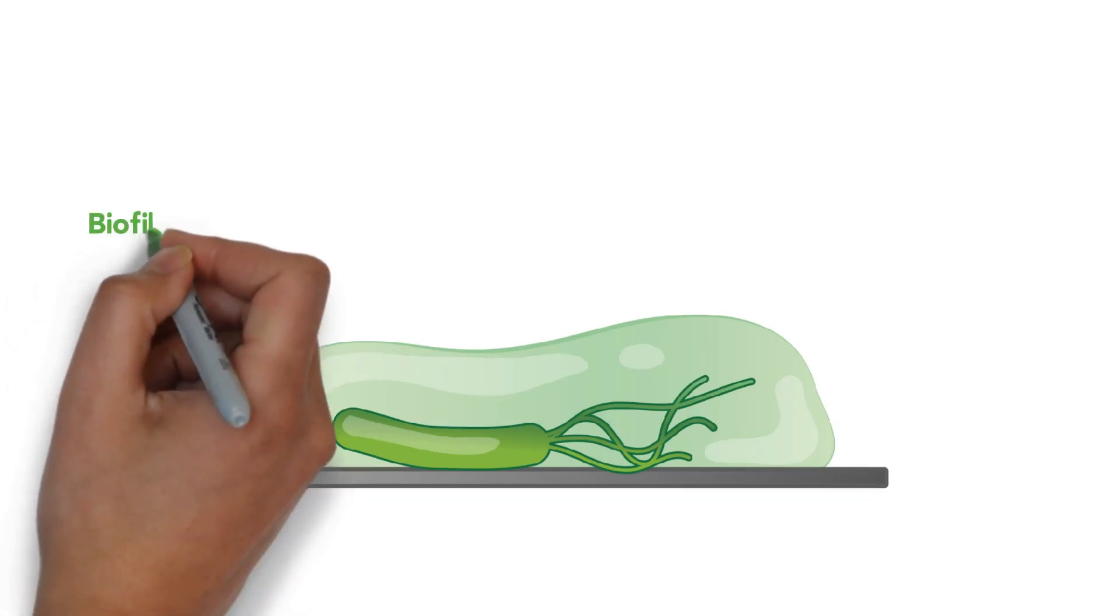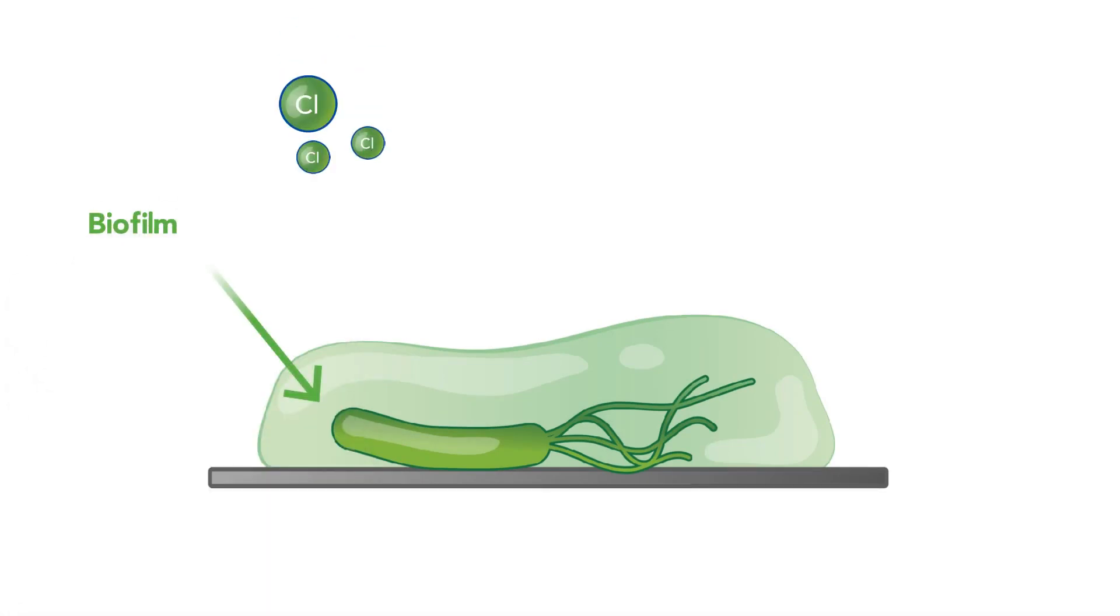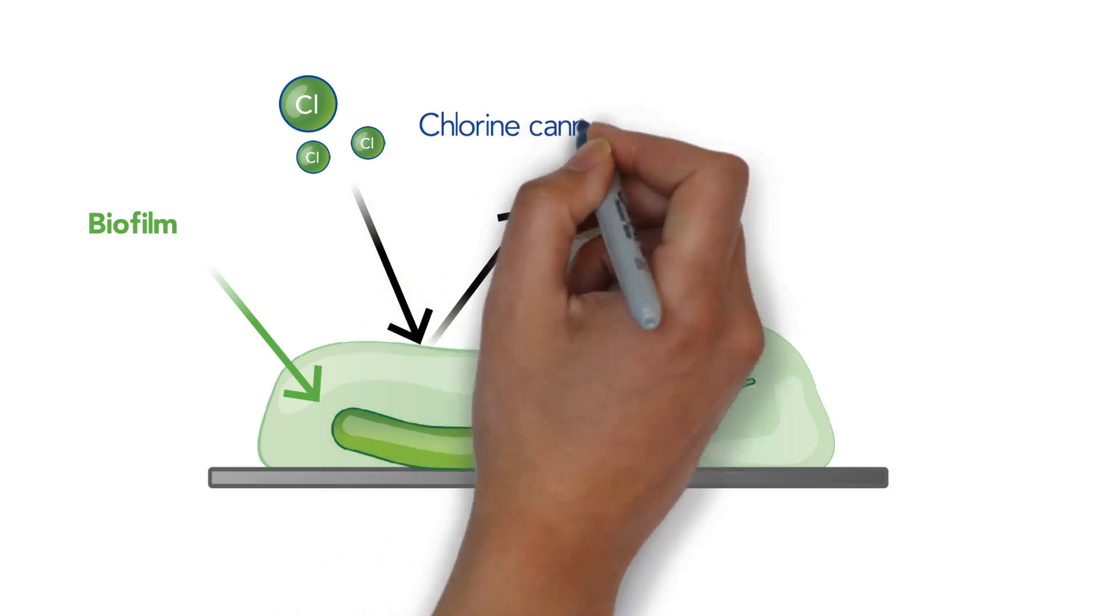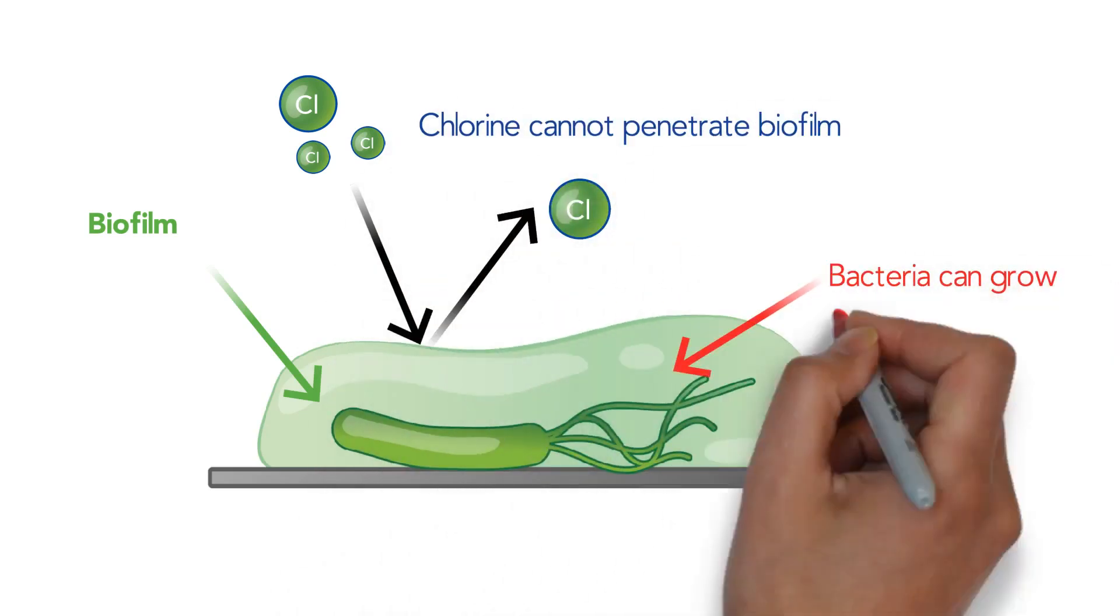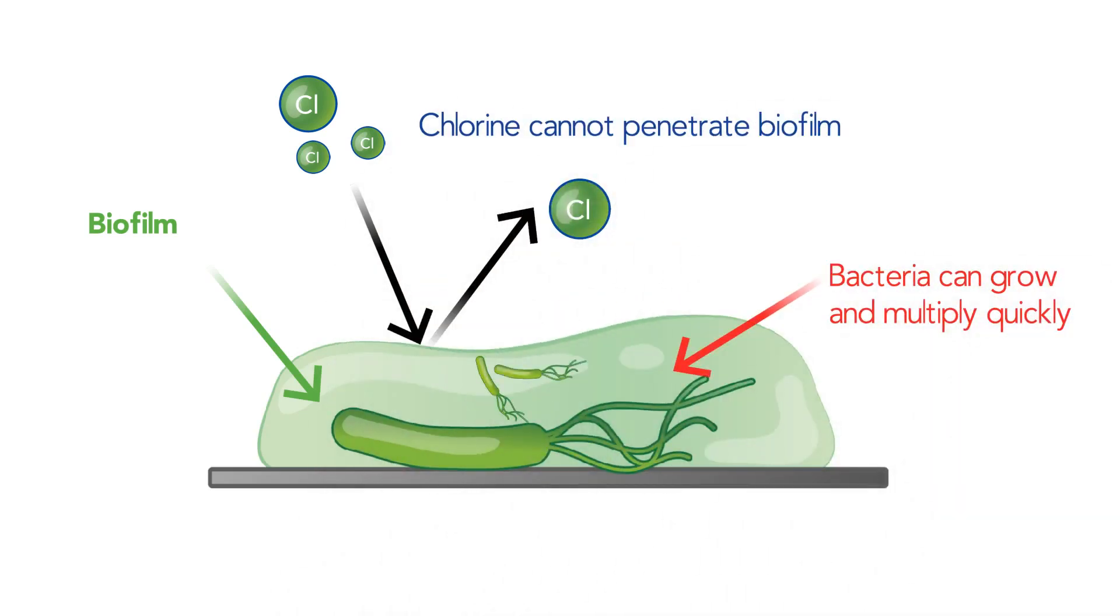The main problem with sand, crushed glass, and other filtration media is biofilm, a slimy, acidic substance formed by bacteria in your filter that protects them from oxidants, inside which bacteria can grow and multiply quickly.